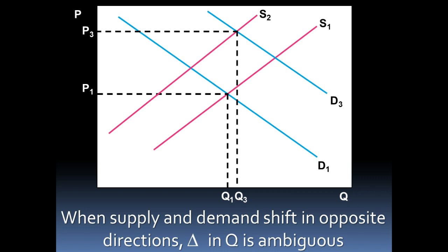You don't need to memorize these interactions, but you should be able to graph them. Understand that when two curves are shifting, the end result on equilibrium price and quantity is unknown. If only one curve is shifting, we can say for certain what happens to both price and quantity. The best approach for any of these problems — on the AP test, in class, or elsewhere — is to draw out the situation, move the curve, find where the new intersection point is, and identify what happens to price and quantity. We'll do more practice in class.